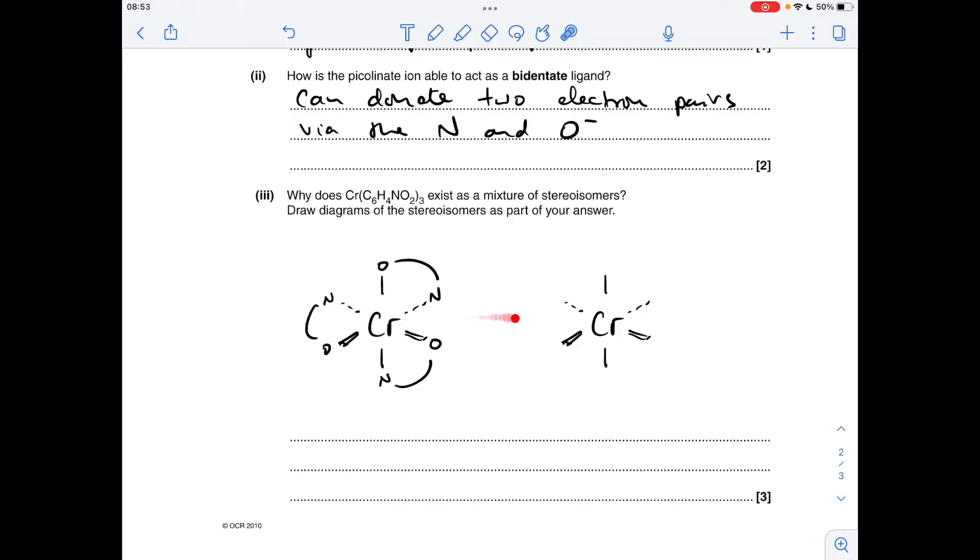Okay, so the mirror image of this is non-superimposable on the left-hand one. So that means that it can exhibit optical isomerism. So if I just draw the mirror of this now, and I would just qualify that by writing something like this. The mirror images are non-superimposable, so this shows optical isomerism.